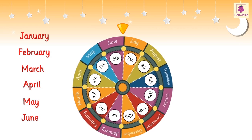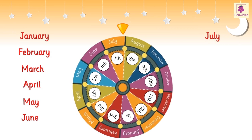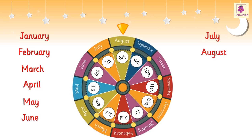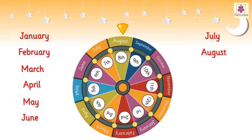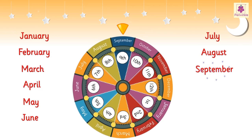The seventh month is July. The eighth month is August. The ninth month is September.